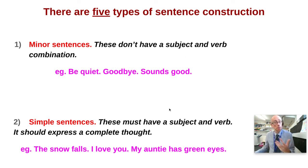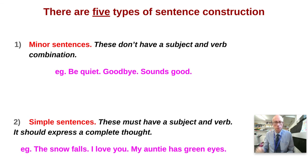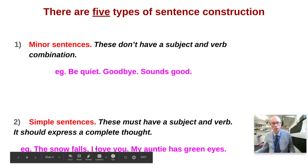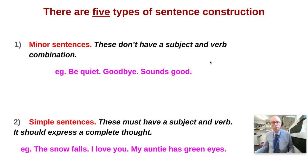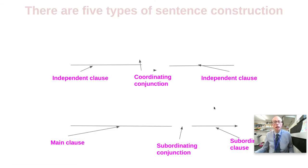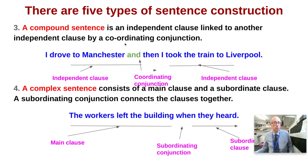Second sentence type: simple sentences. A simple sentence has to have a subject and a main verb and should express a complete thought. Here we've got three examples: 'The snow falls', 'I love you', 'My auntie has green eyes'. Each one is a simple sentence. In 'I love you', 'I' is the subject, 'love' is the verb, and 'you' is the object.